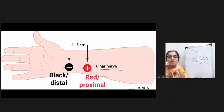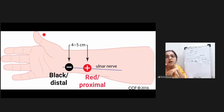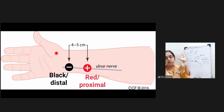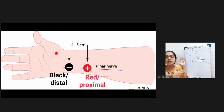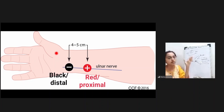You can see the patient's thumb - we expect adductor pollicis to do adduction. The black electrode is placed distally and the red proximally along the course of the ulnar nerve. When current passes between positive and negative, the ulnar nerve gets stimulated and adductor pollicis - supplied by the ulnar nerve - produces adduction.